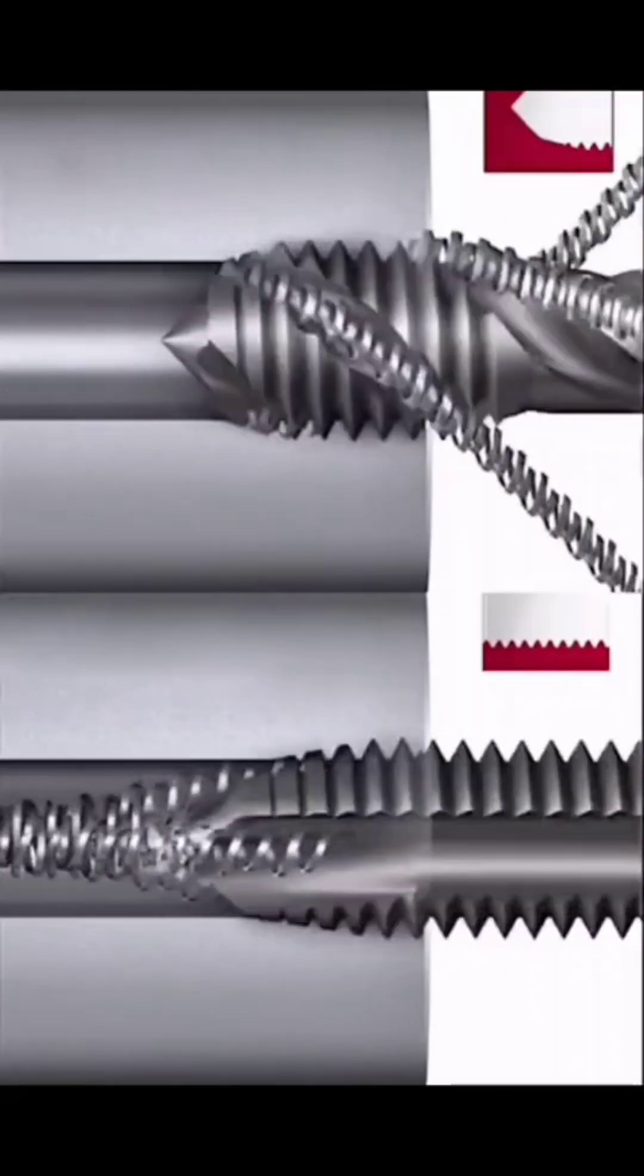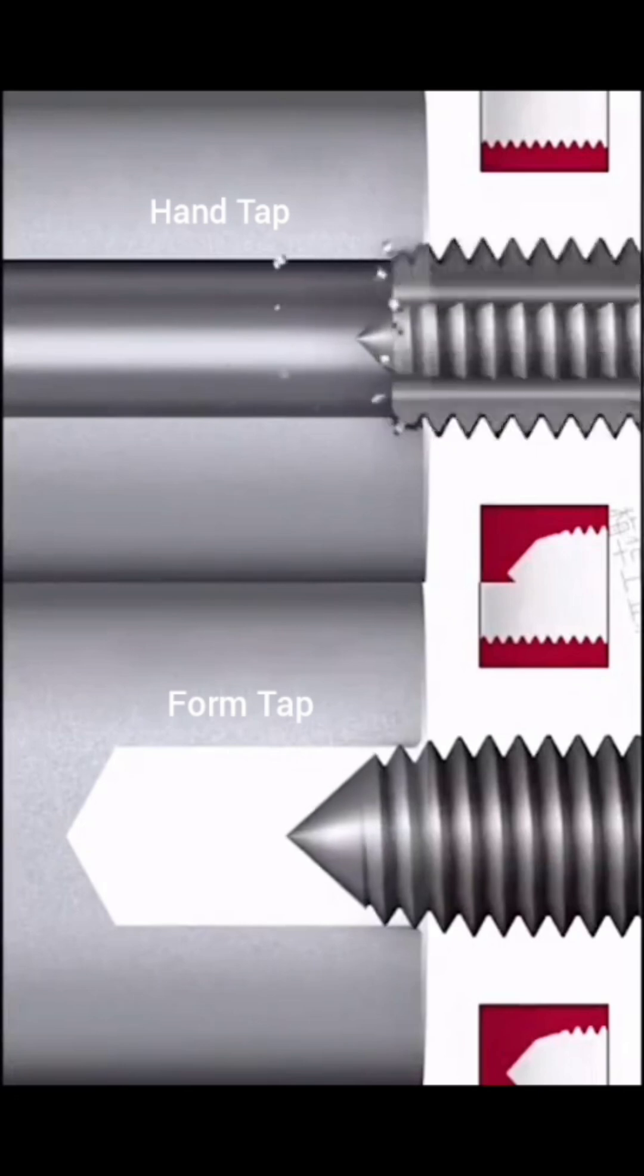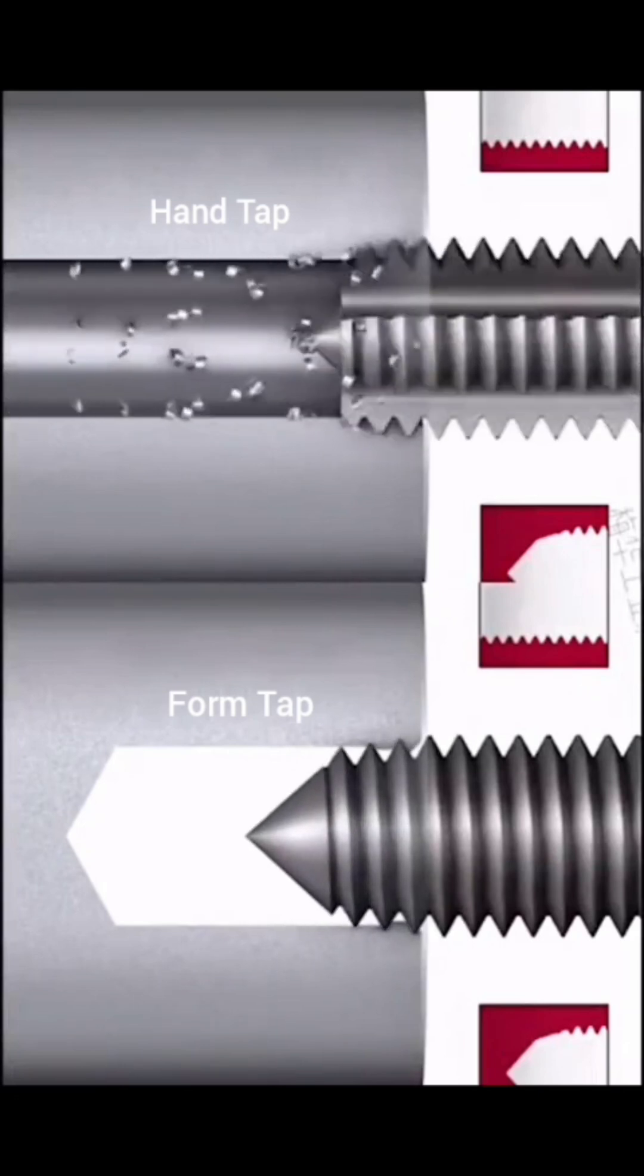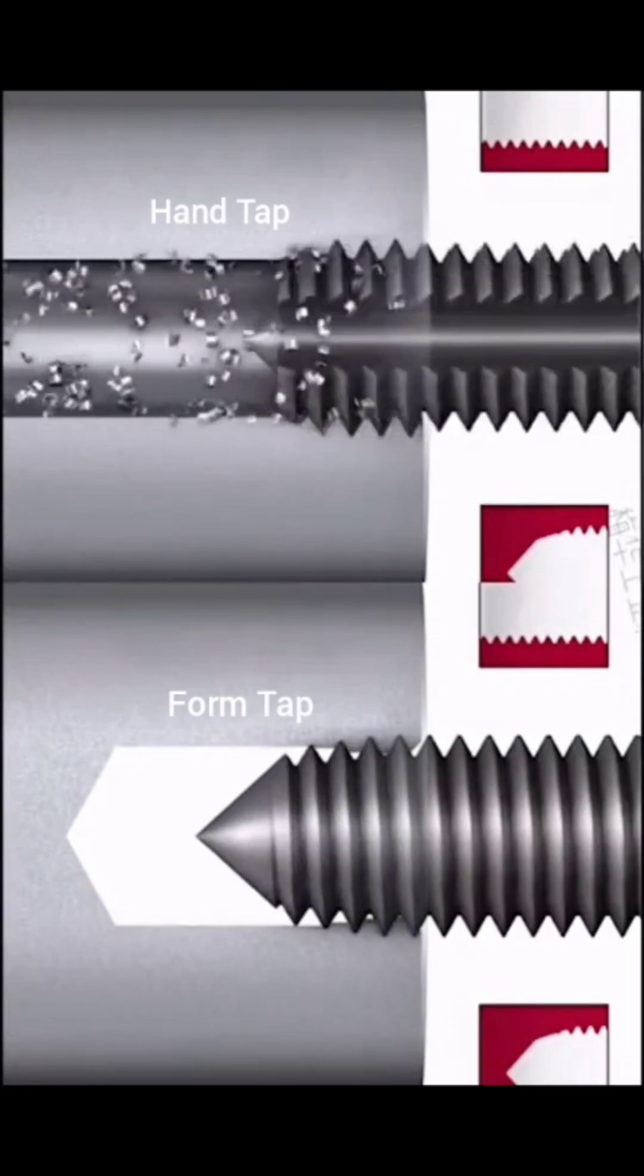Spiral point taps are great for through hole threading as the chips are directed ahead of the tap. Hand taps do not offer consistent chip formation and therefore we don't use them very often. Form taps are the strongest thread type as the material is rolled into place instead of cutting.